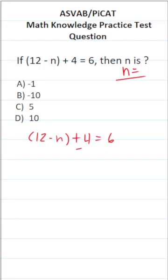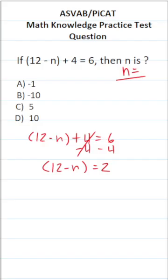The first thing I'm going to do is subtract 4 from both sides of this equation. In doing so, this crosses out here, leaving me with 12 minus n on this side equals 6 minus 4, which is 2. Now at this point, we can go ahead and drop those parentheses — they have no value — so this becomes 12 minus n equals 2.